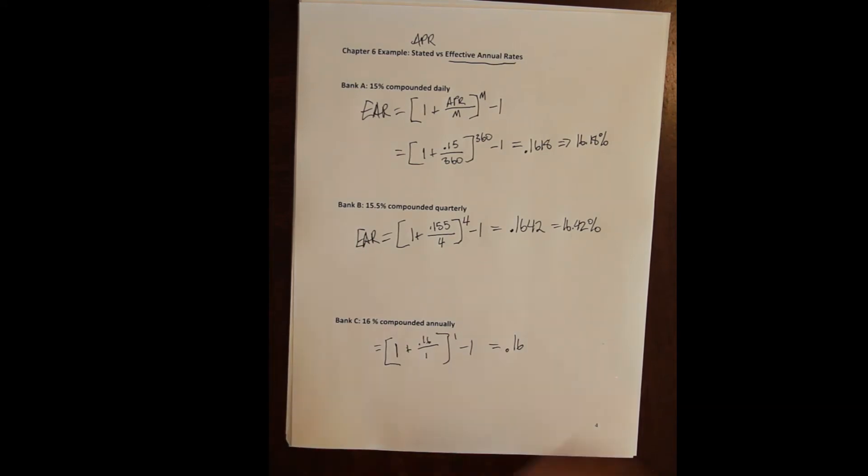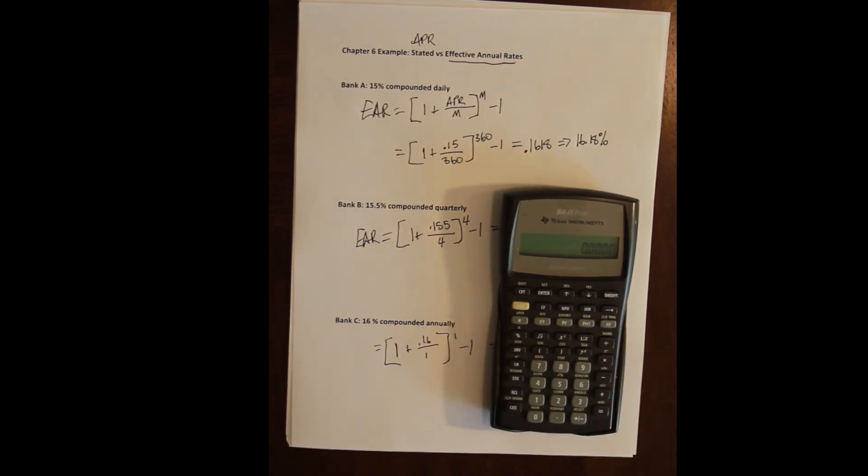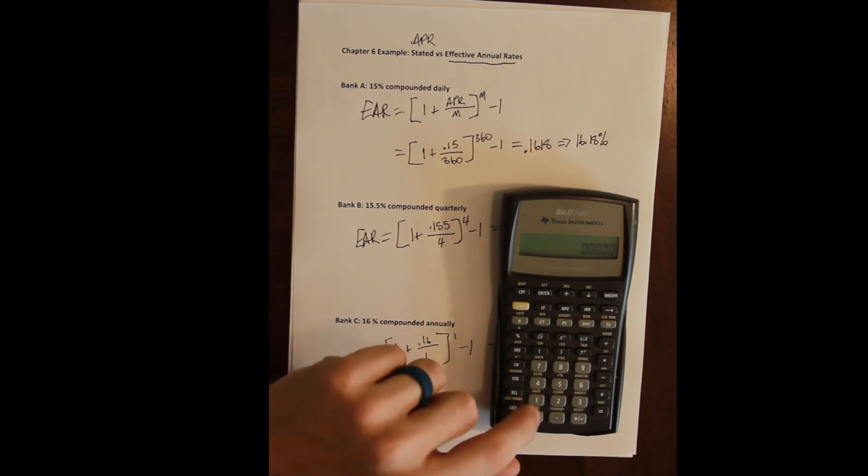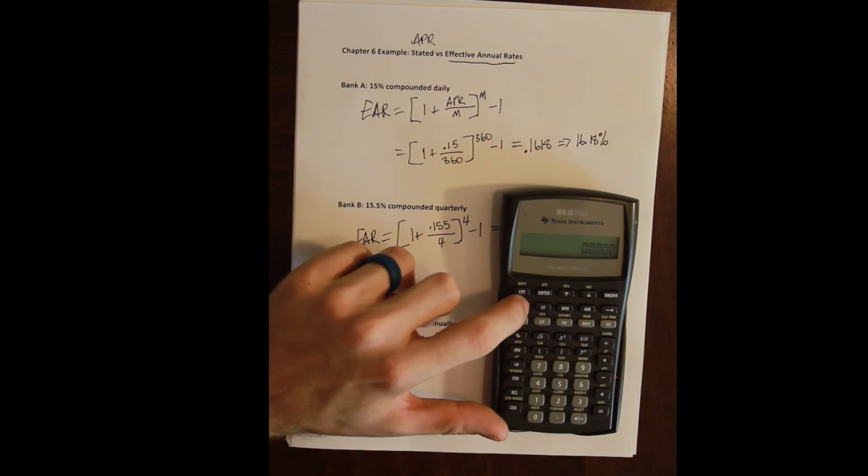Now in the calculator it is very straightforward, however we do need to be in a different environment. The environment we need to be in is called the interest conversion environment. There are instructions in all the calculator help files. Notice that above the two button it says ICONV. That's the interest conversion environment. To get in there we just press second and the two button.